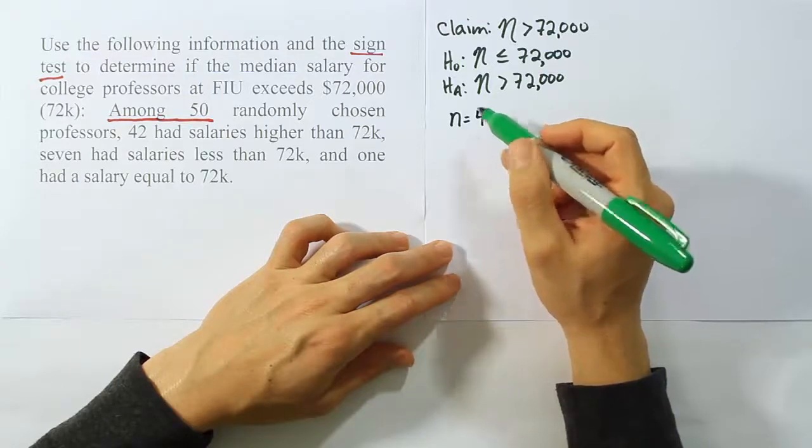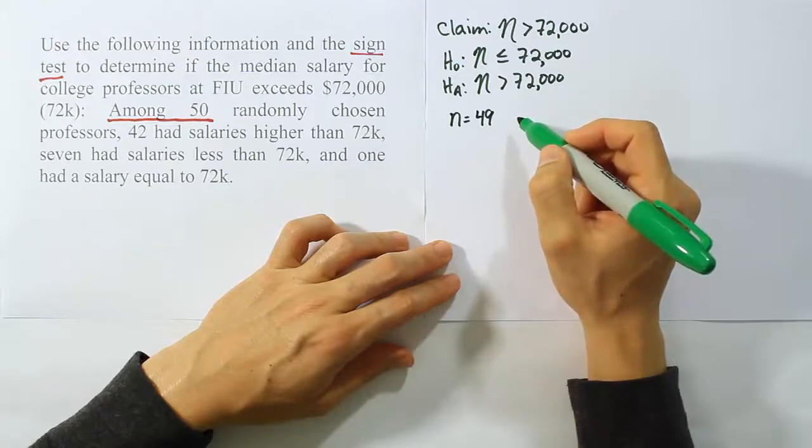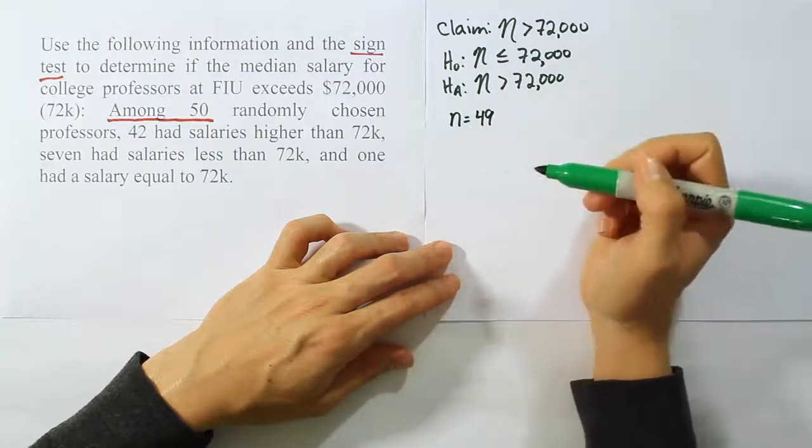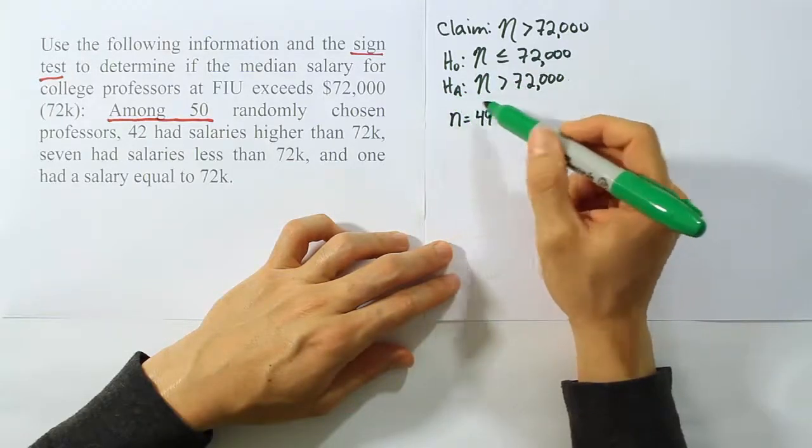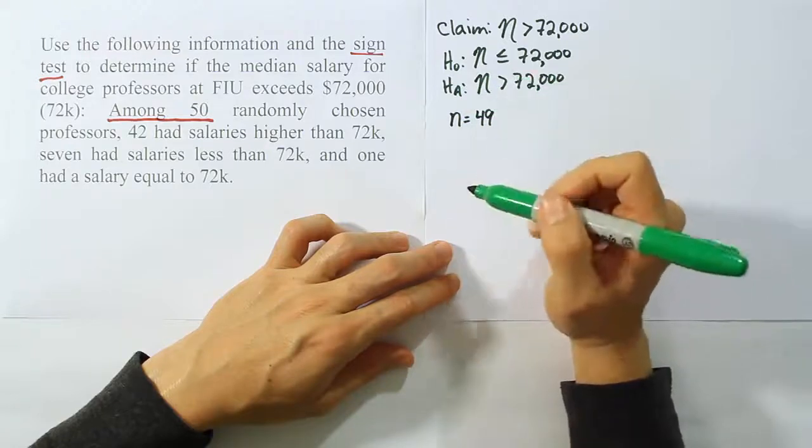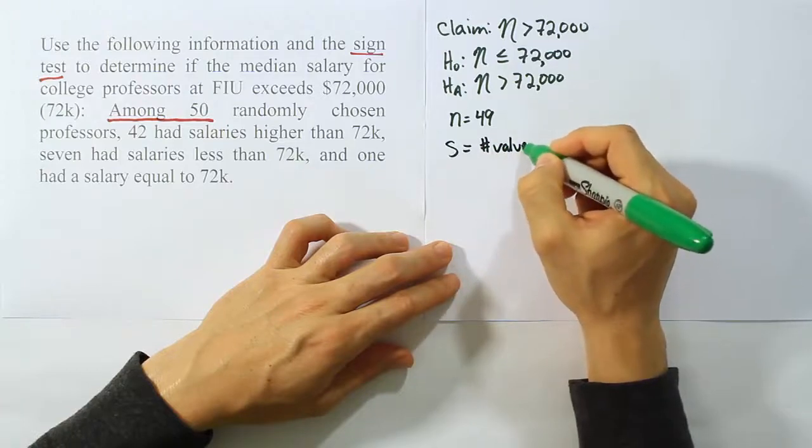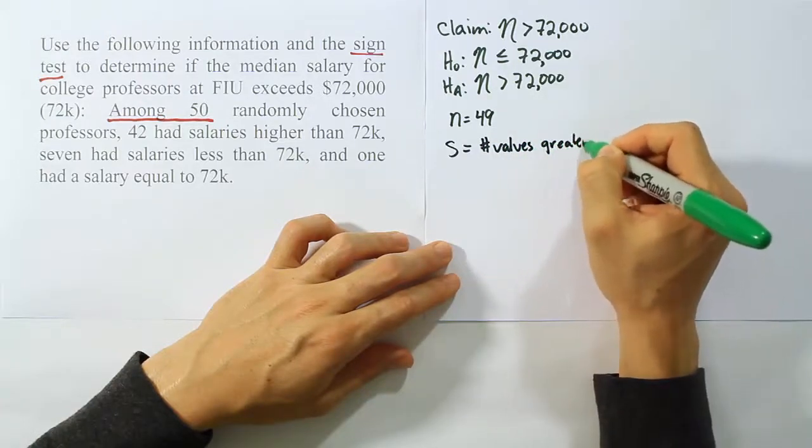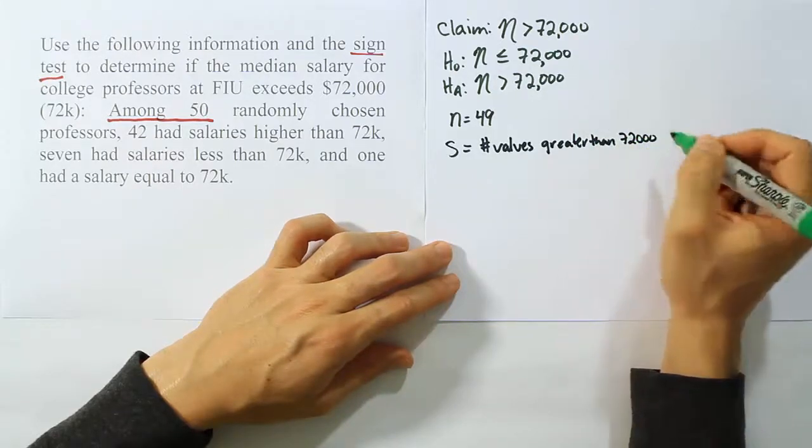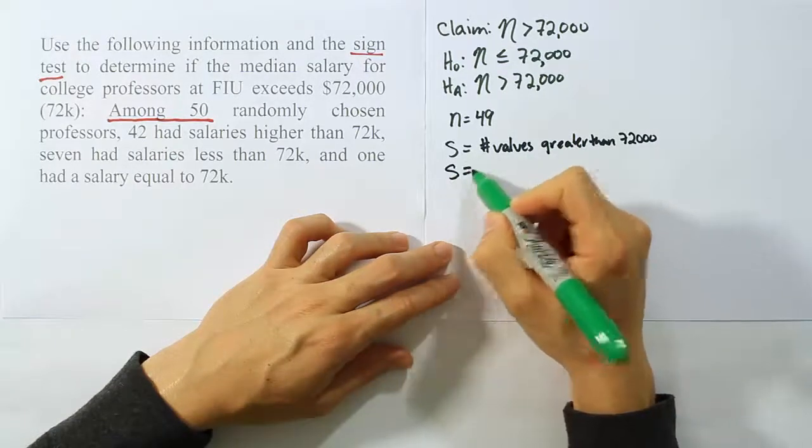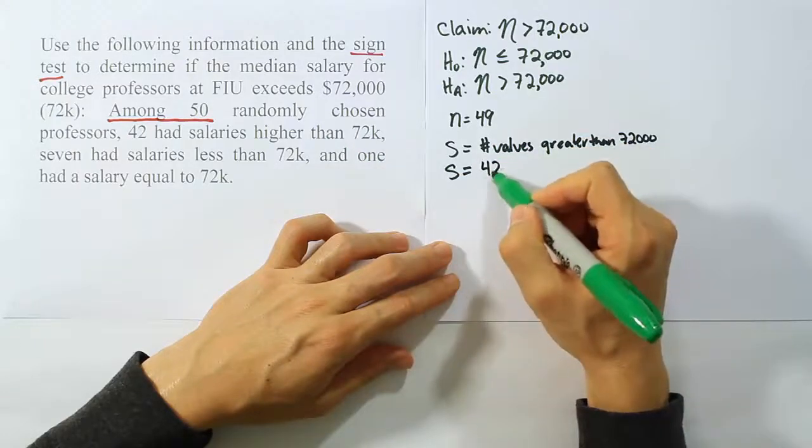From there, among the other values that we're dealing with, we see that we have 42 that were higher and 7 that were less. Now, what is the test stat that we're supposed to use for a problem where we have a greater than symbol? Normally S is supposed to be the number of values greater than, in this case, 72,000. So how many values are greater than 72,000 in this problem? In this problem it says 42 had salaries greater than that. So my S is 42.